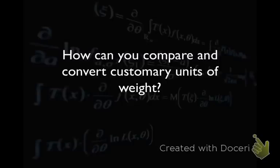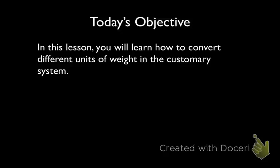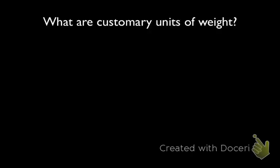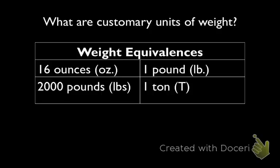How can you compare and convert customary units of weight? In this lesson, you will learn how to convert different units of weight in the customary system. We've learned how to work with length and capacity, and the last one we're going to look at is weight. In weight during the customary system, we use three different measurements: ounces, pounds, and tons. There are 16 ounces in one pound and 2,000 pounds in one ton.